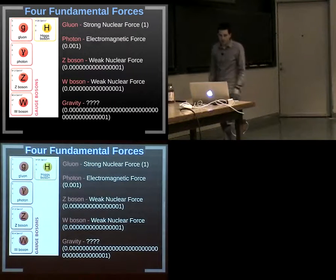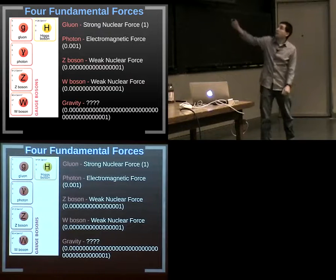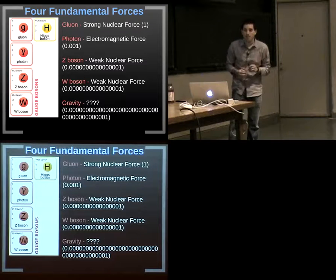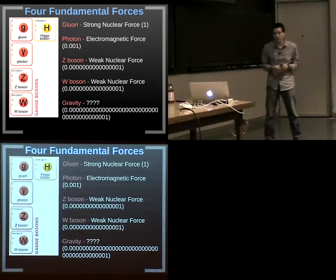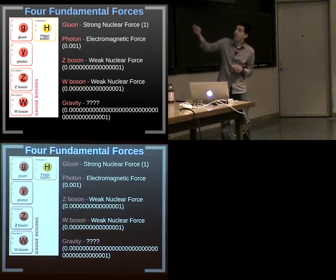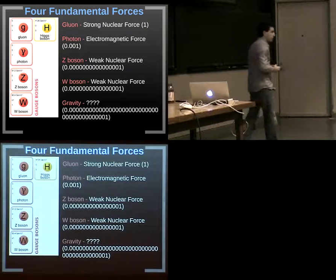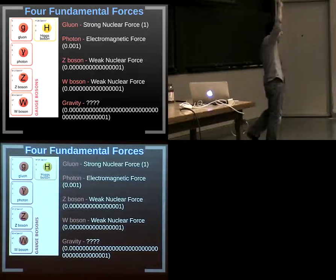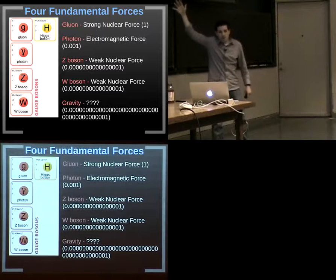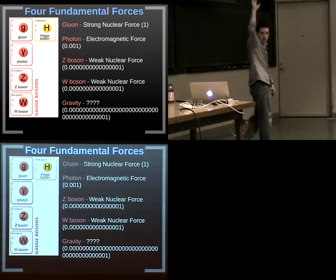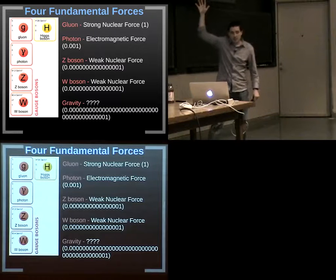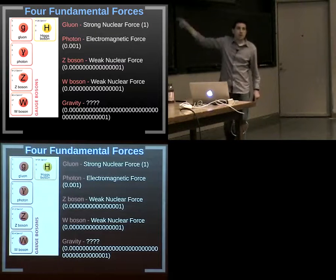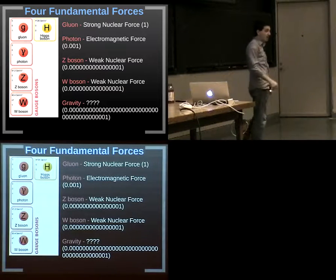There are four fundamental forces. The gluon controls the strong nuclear force and keeps quarks confined in protons and neutrons. The photon controls the electromagnetic force. The Z and W bosons control the weak force. And gravity isn't in the standard model — which seems important since we're standing on a planet. The relative strengths: strong force is 1, electromagnetic is one-thousandth as strong, the weak force is 10 to the minus 16 times the strong force, and gravity is about 10 to the minus 41.